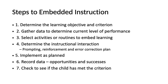The following are seven steps to embedded instruction. Number one: determine the learning objective and criterion. Number two: gather data to determine the current level of performance for your students. Number three: select activities or routines in which to embed your learning, being precise about where within your classroom routine you will embed objectives. Number four: determine the instructional interaction structure — prompting, reinforcement, and error correction plan. Number five: implement as planned. Number six: record your data appropriately. Number seven: check to see if the child has met the criteria and is succeeding in what they are working on.